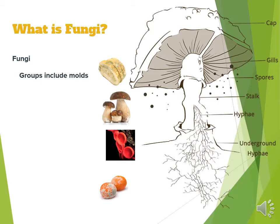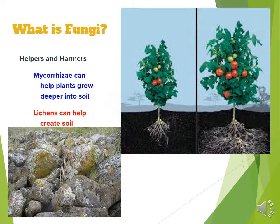Fungi groups include molds, club fungi which look like clubs, sack fungi which are kind of like little bowl-shaped sacks, and imperfect fungi which can affect some fruit and different things. Fungi can be both helpers or harmers. You have mycorrhizae that help plants grow deeper into the soil and provide nitrogen breakdown for the plants — they work really well with beans and legumes. Lichens also can help create soil; they break down rock over many, many years.